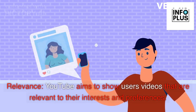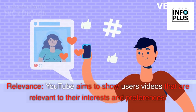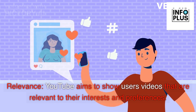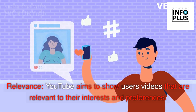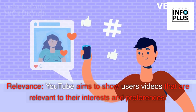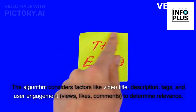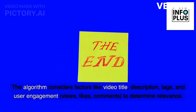Relevance. YouTube aims to show users videos that are relevant to their interests and preferences. The algorithm considers factors like video title, description, tags, and user engagement — including views, likes, and comments — to determine relevance.